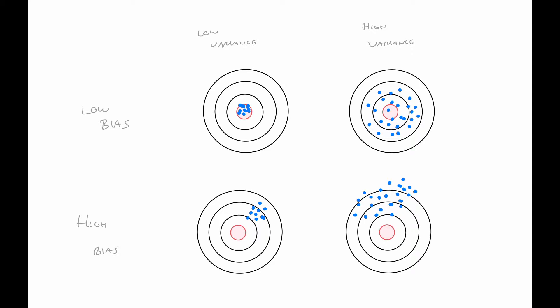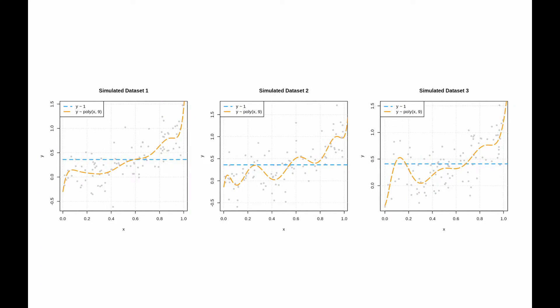The top left — low bias, low variance — is what we're looking for. The bottom right is what we absolutely want to avoid. But between the bottom left and top right, which is preferable? In statistics we really emphasize unbiased estimators, but in terms of average distance from the target it's actually unclear which is better. We're going to need a different metric.